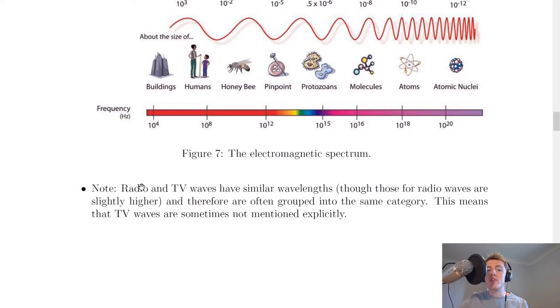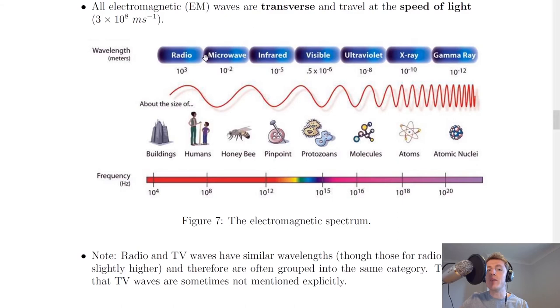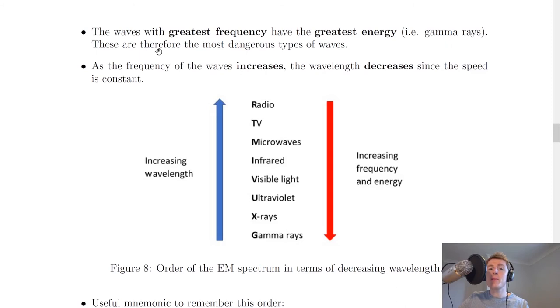So the last thing to note is something that I just mentioned earlier, which is that radio and TV waves have similar wavelengths, though those for radio waves are slightly higher, and therefore they're often grouped into the same category. This means that TV waves are sometimes not mentioned explicitly, as was the case up here. So remember we said that TV waves would fit in between radio and microwaves, but they're not mentioned explicitly in this example. So you might sometimes see the spectrum with TV waves in it, or you might not.